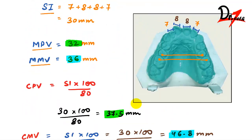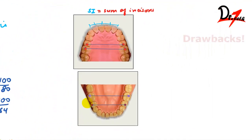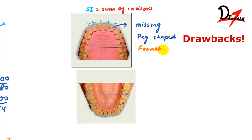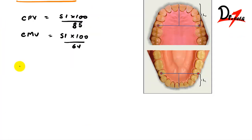The Pons analysis has some drawbacks. First, maxillary lateral incisors are the most commonly missing teeth, so if absent the analysis cannot be done. Second, peg-shaped laterals will give abnormal measurements. Third, this analysis was done on a French population, so it is not universal and may not apply to other populations. Finally, it does not give any information about skeletal malocclusion — it only measures teeth.